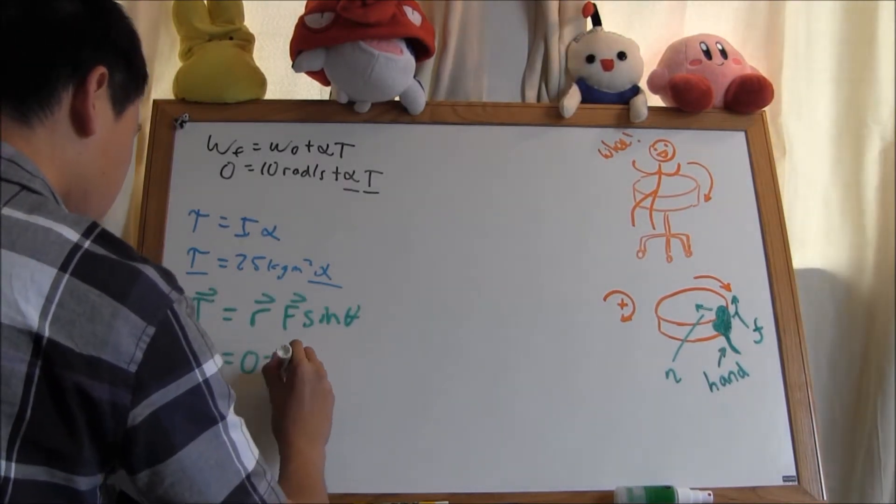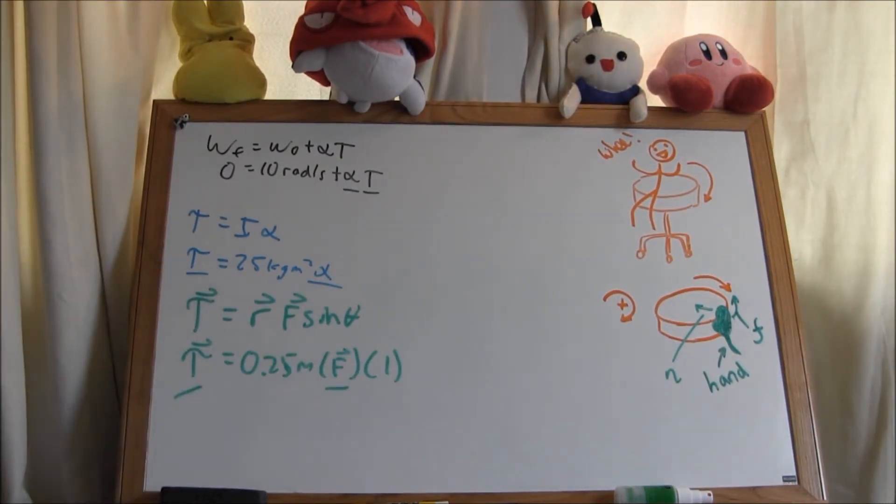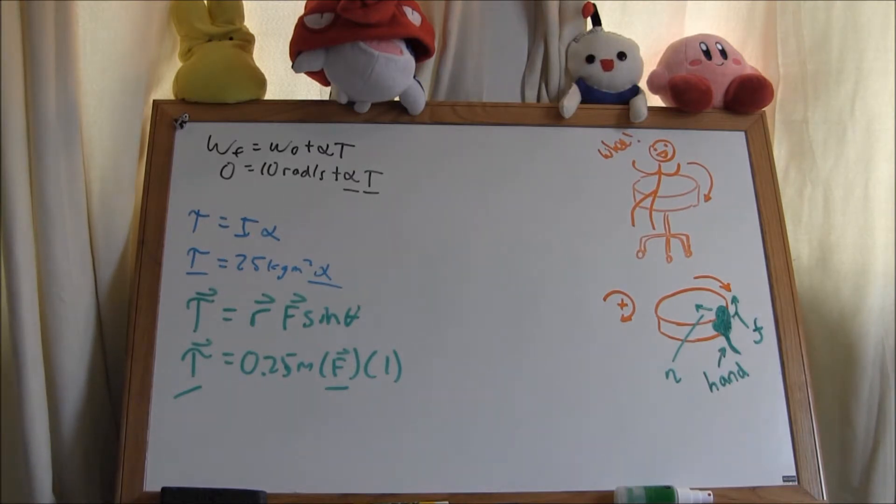Next, we can relate torque to the force of friction from the hand by using the equation torque equals the friction's radius times frictional force and sine of the angle between the force and the lever arm. Since the friction is circular, the angle is 90 degrees and sine equals 1. Now we have torque and friction as unknowns.